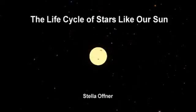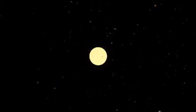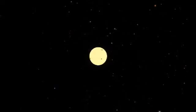Our Sun, and other stars like it, do not remain exactly as they appear now. Stellar lifetimes are much longer than ours, but like us, they progress through stages of life. The progression of these stages is connected to the formation of the planets and their fate in the events to come billions of years from now. In this tour, we investigate the life cycle of stars like our Sun.